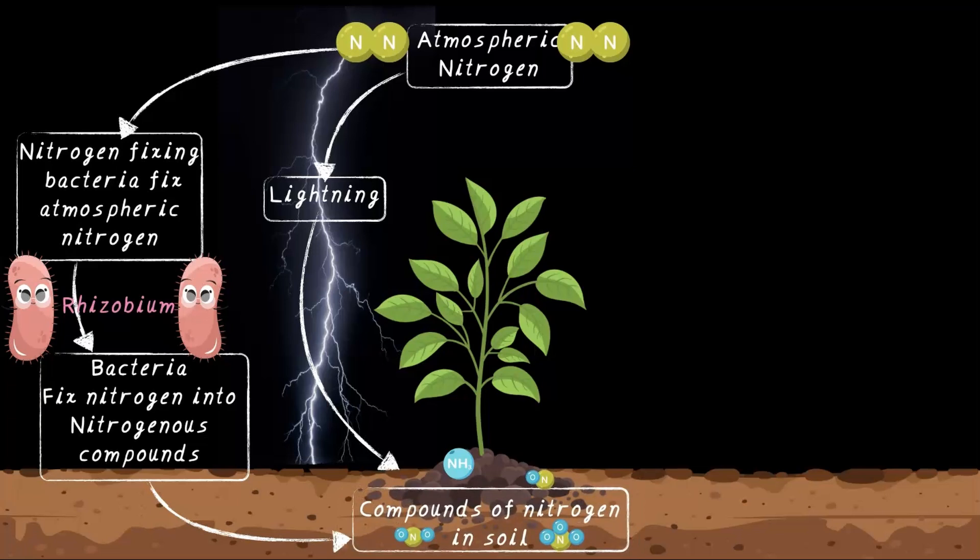What happens next? Plants absorb this nitrogen through their roots—we call it uptake. Now the nitrogen is inside the plants, helping them grow and thrive. But nitrogen doesn't stop there; its story is not ending inside the plants.